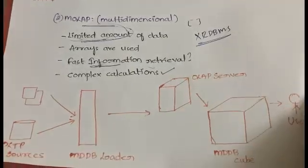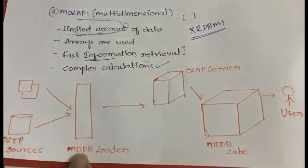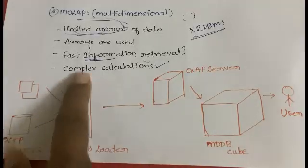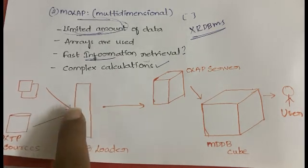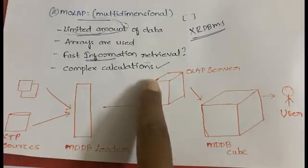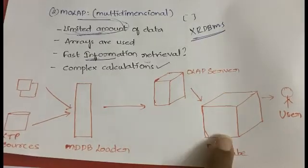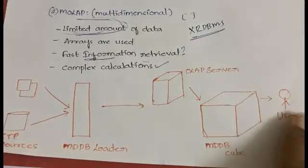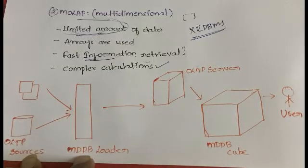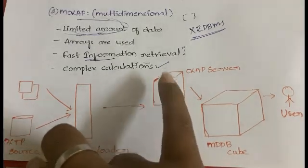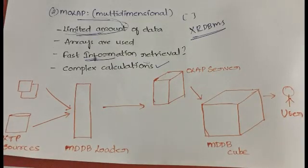For the MOLAP architecture: flat files and OLTP sources are combined and the information is sent into a multi-dimensional database loader — unlike ROLAP which uses an ETL server. From the multi-dimensional database loader, the information goes to the OLAP server, and from the OLAP server it goes to the multi-dimensional database cube (MDDB cube), and from there to the user.